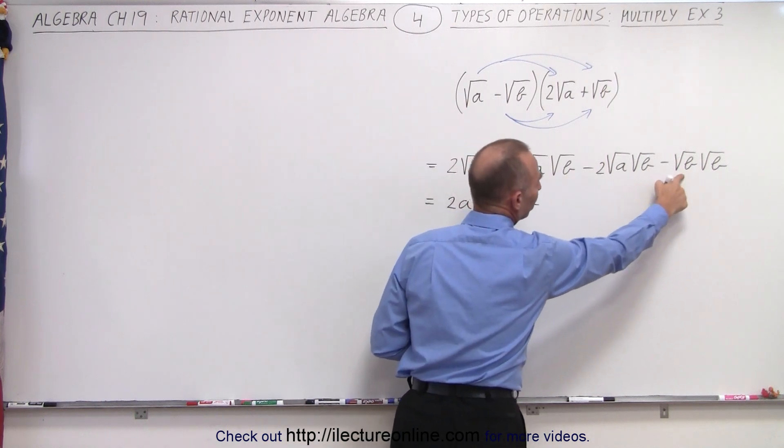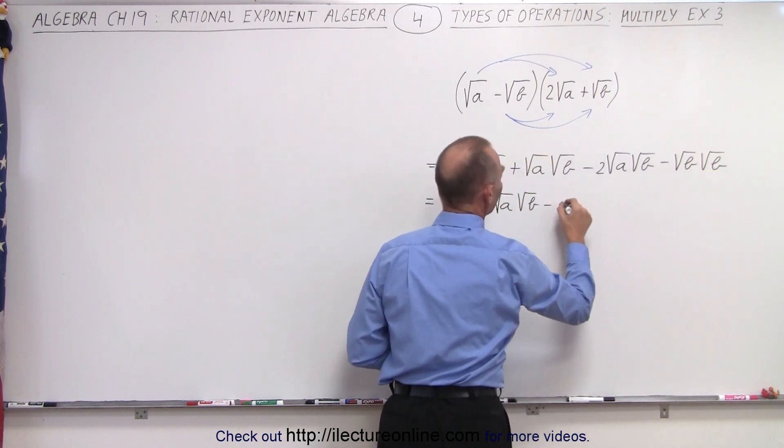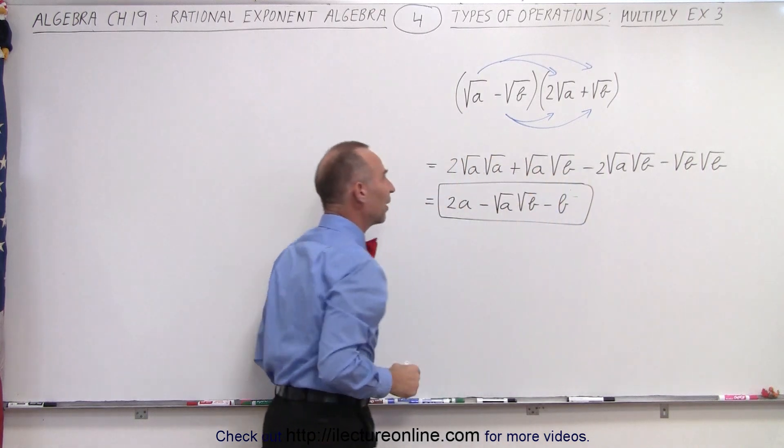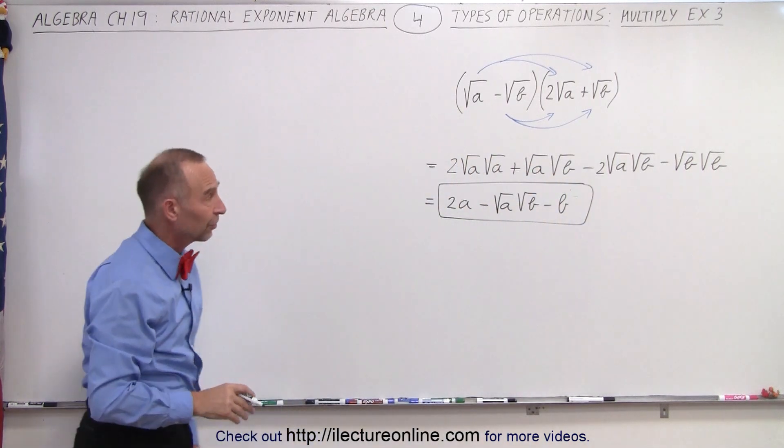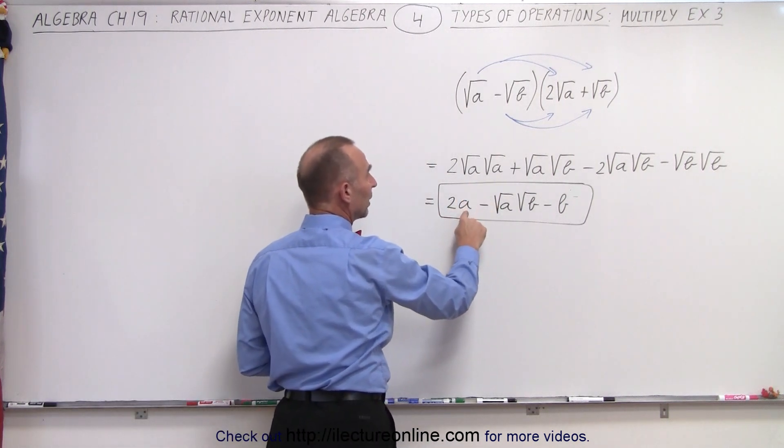And then here we have the square root of b times the square root of b. That becomes simply b or minus b. And this is the final simplified result of that product. Actually it's not that bad. Just remember the rules that this converges down to an a.